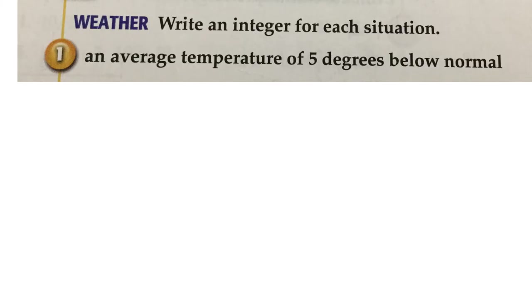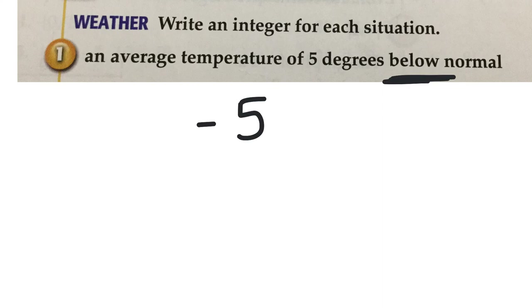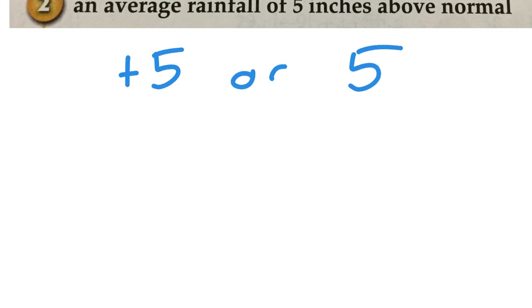Write an integer that represents each situation. If we want an average temperature of 5 degrees below normal, what number would we use? Because it is below normal, the average temperature would be negative 5 — the word 'below' gives us a hint that we need to use a negative number. If it were above normal, we could represent that as positive 5, or just 5 — that above word lets us know we are dealing with a positive.